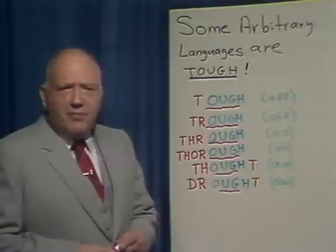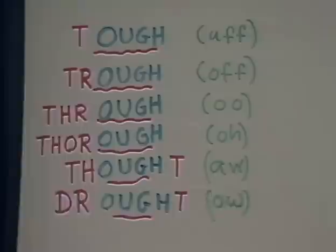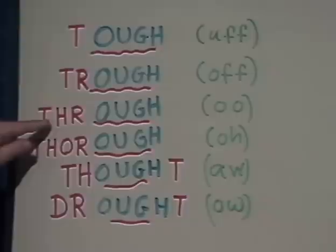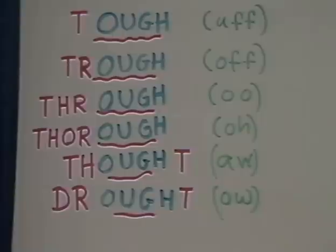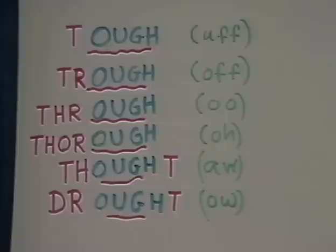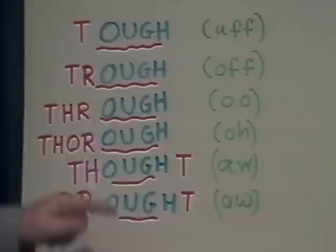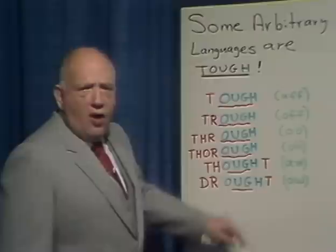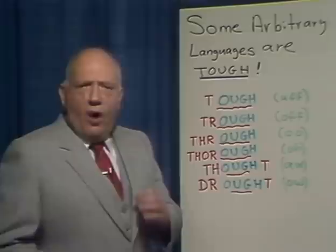Look at O-U-G-H and all the different sounds it can make. With a T in front, it becomes 'tough.' With T-R, it becomes 'trough.' With T-H-R, it becomes 'through.' Add an O between the H and R and it becomes 'thorough.' T-H at the beginning and T at the end gives 'thought,' and D-R at the beginning with T at the end gives 'drought.' The same combination of letters, six different pronunciations. At least in math, once you've learned what three means, it's always the same thing.